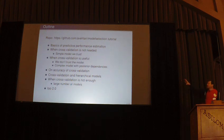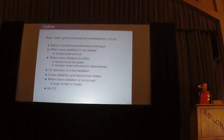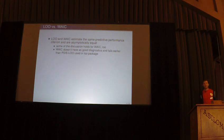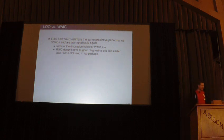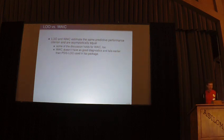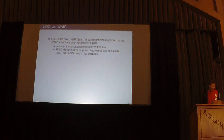Then examples where cross-validation is useful, accuracy of cross-validation, cross-validation for hierarchical models, and when cross-validation is not enough — which is the case of a very large number of models — plus a little about the forthcoming LOO version 2. Just one slide about information criteria: WAIC is asymptotically equal to Bayesian leave-one-out, so some discussion holds for WAIC too, but it doesn't have as good diagnostics and fails earlier than the Pareto-smoothed importance sampling LOO used in the LOO package.